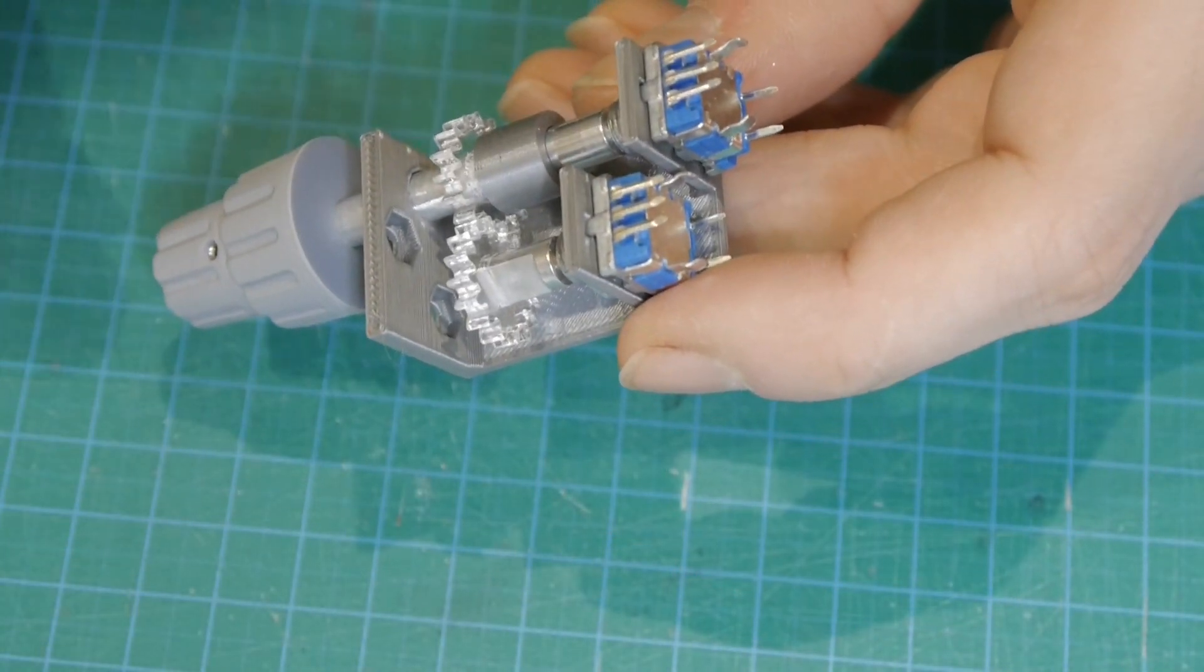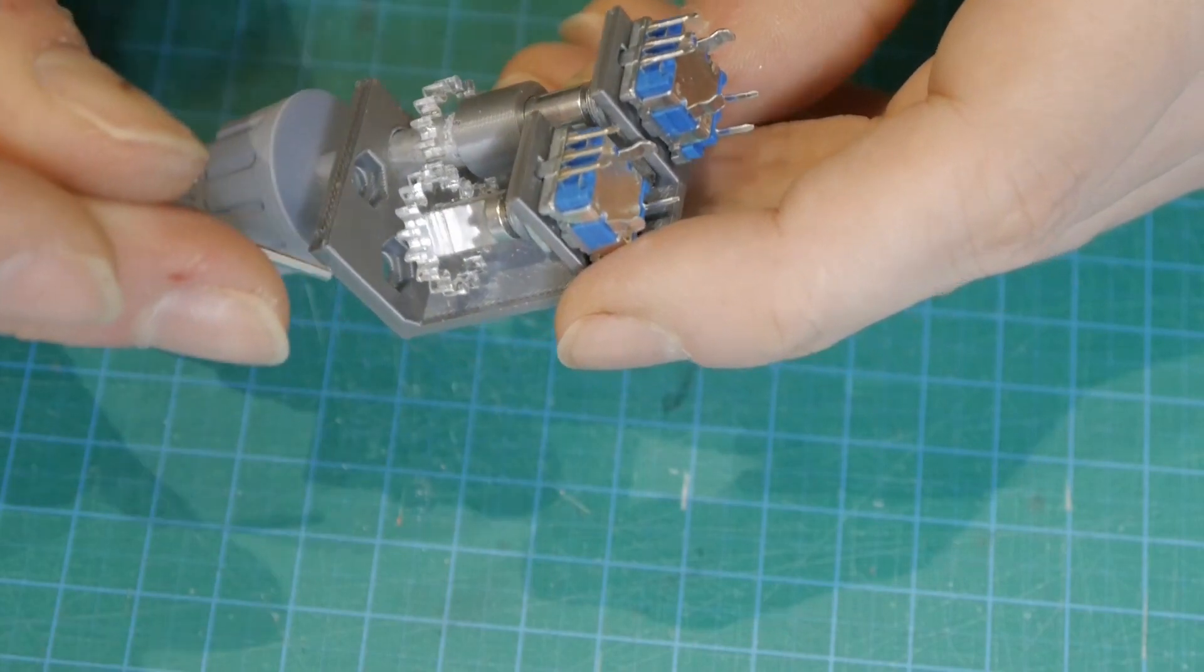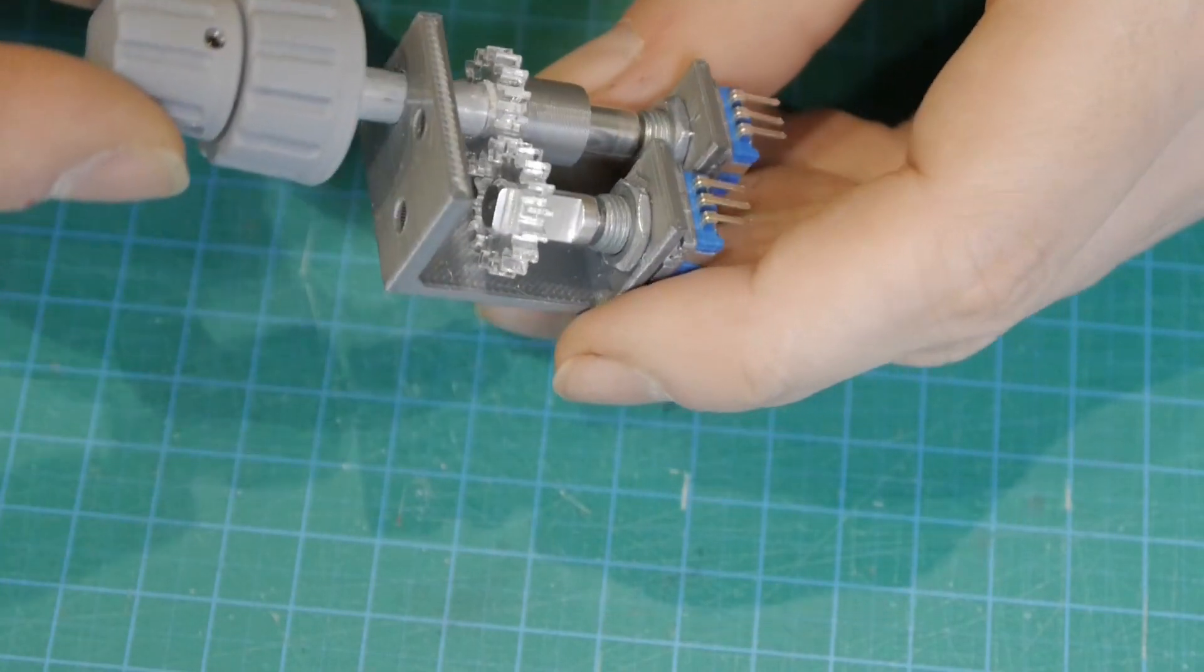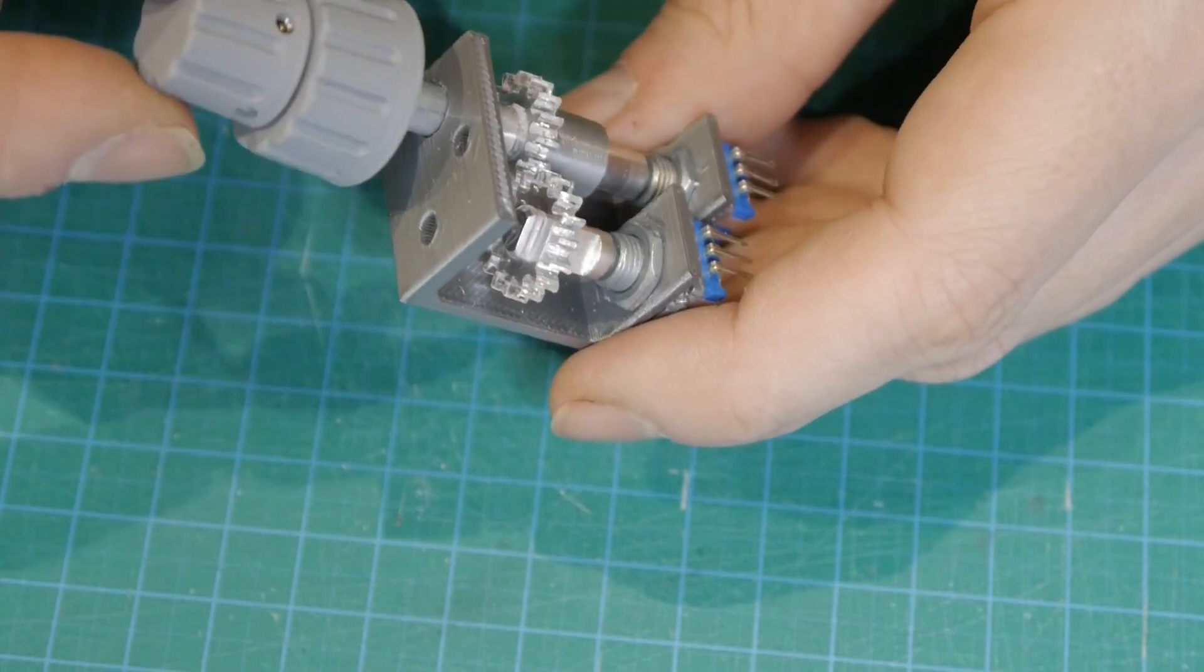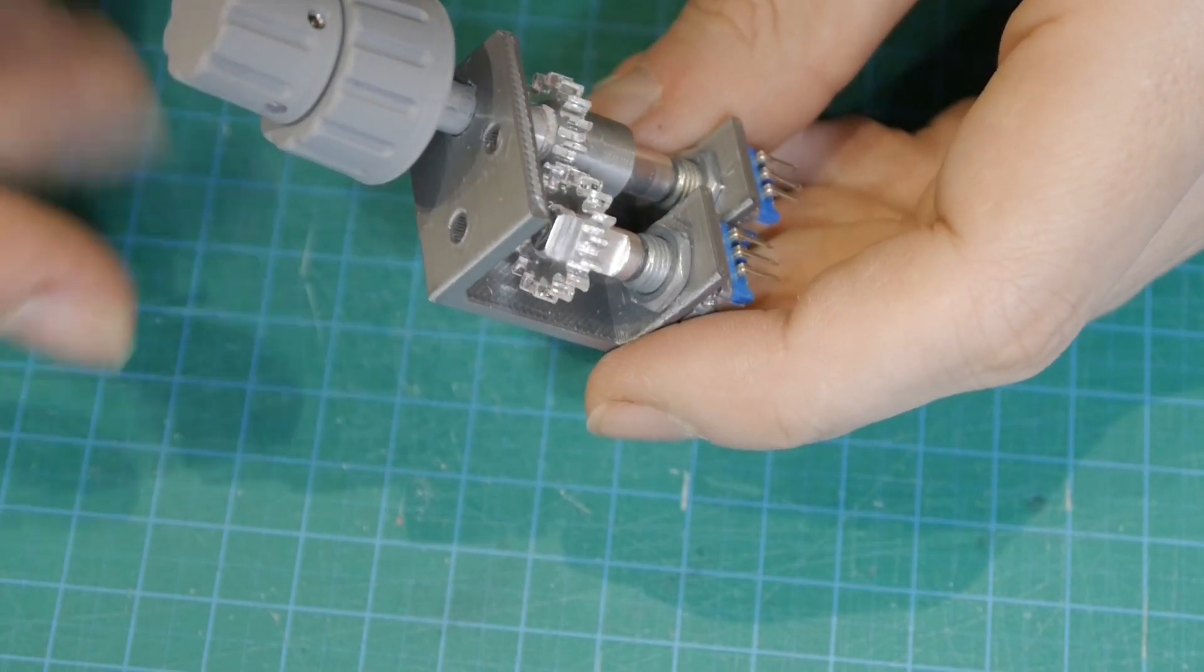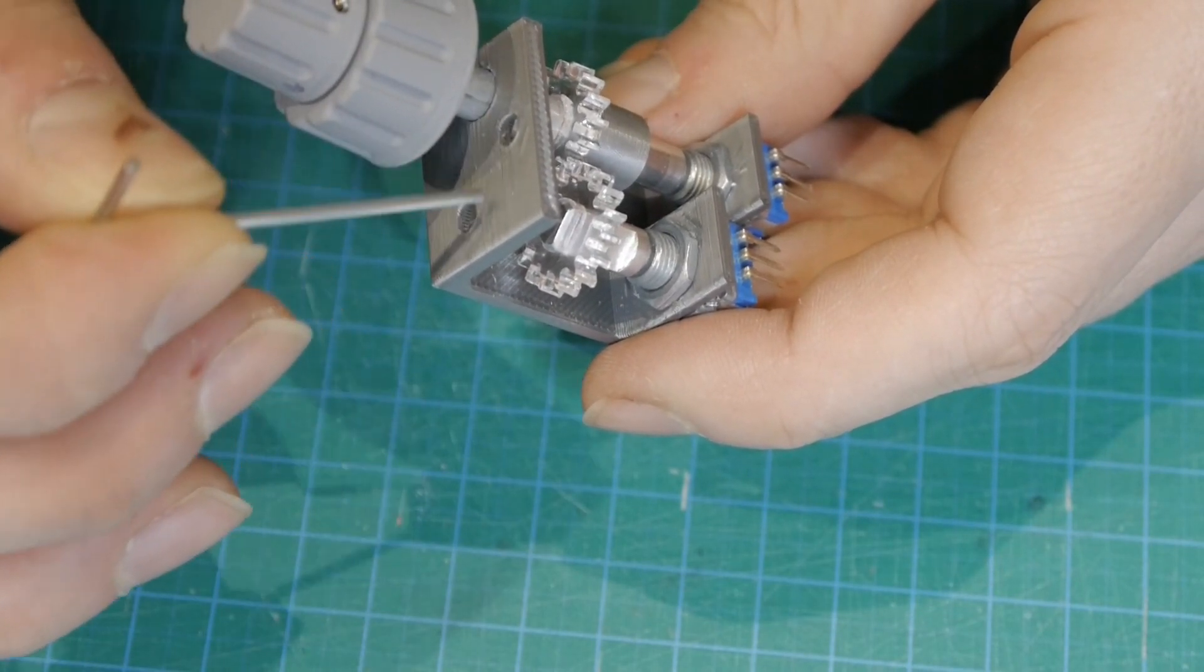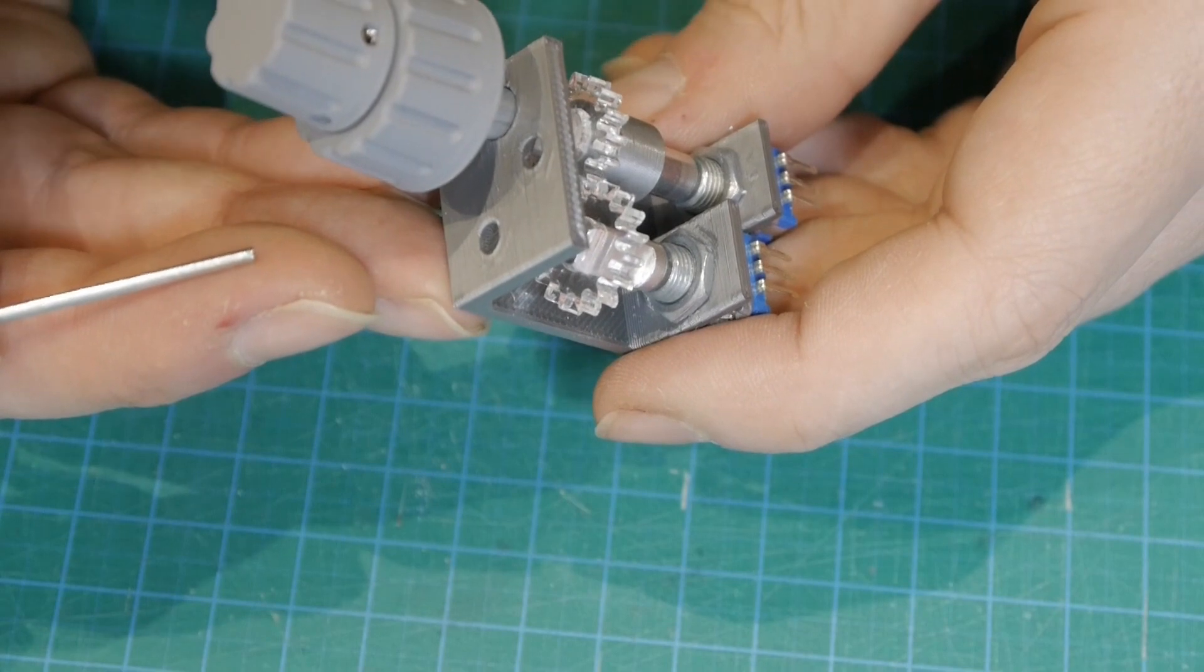You can insert two M3 nuts here into the case and then place it under the bottom of the panel and go through it with two M3 screws. And so you can fix it underneath the panel.